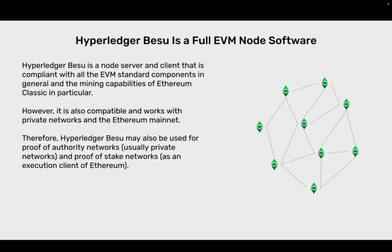Hyperledger Bezu is a full EVM node software. It is a node server and client that is compliant with all the EVM standard components in general and the mining capabilities of Ethereum Classic in particular. However, it is also compatible and works with private networks and the Ethereum mainnet. Therefore, Hyperledger Bezu may also be used for proof of authority networks, usually private networks, and proof of stake networks as an execution client of Ethereum.